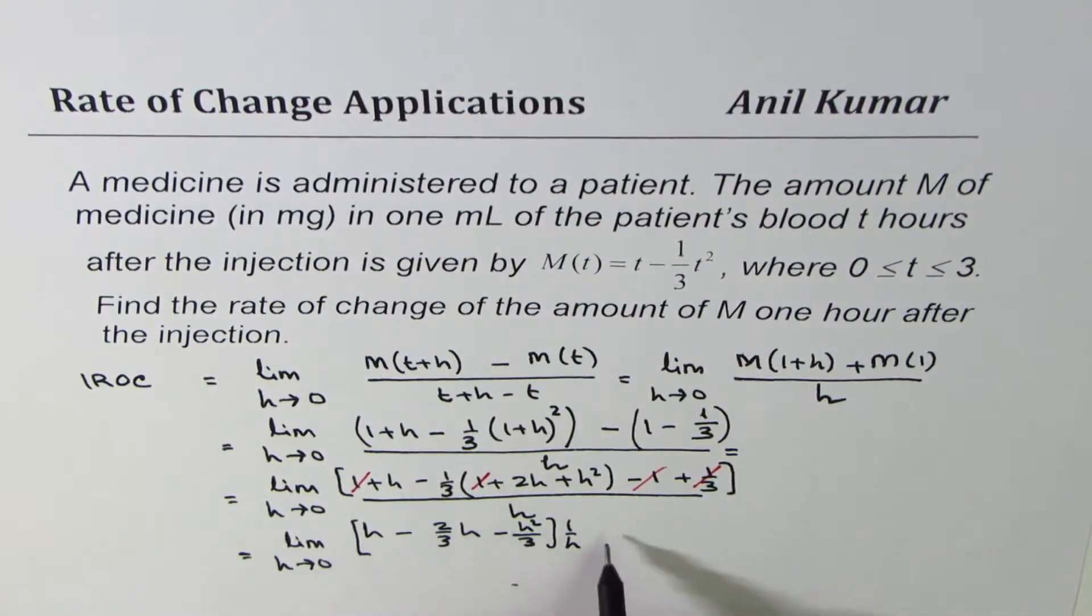So from here we can actually take h common and then cancel with this. So what we get here is limit h approaches 0.